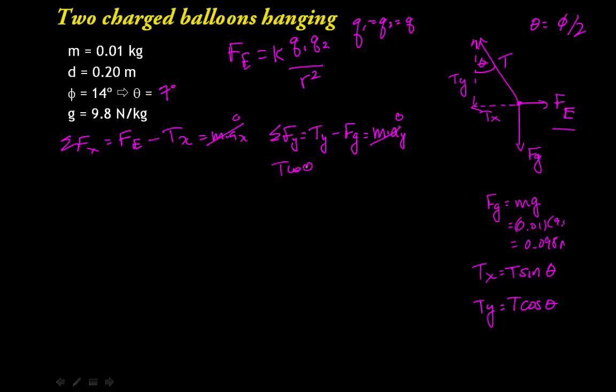We have t cosine theta. I'll bring the gravity force to the other side, adding it to both sides, equals the force of gravity. That allows us to solve for the tension. So tension equals the gravity force on one balloon divided by the cosine of the angle theta. So that's going to be 0.098 divided by cosine of seven. So our tension force is going to be 0.099 Newtons.